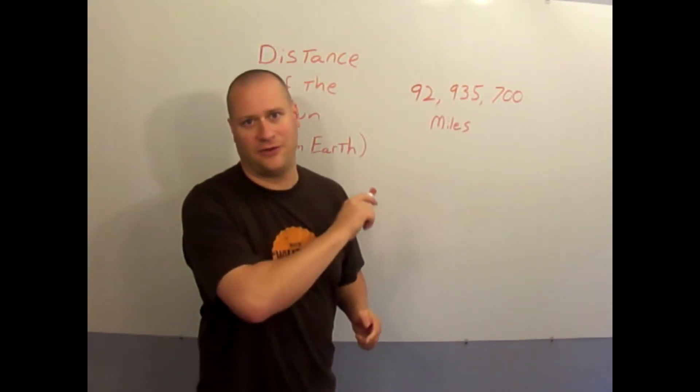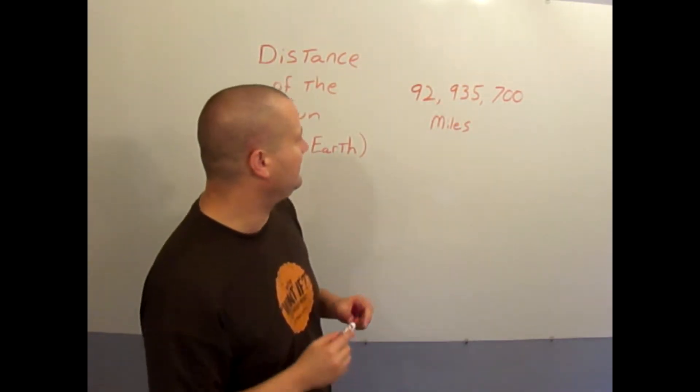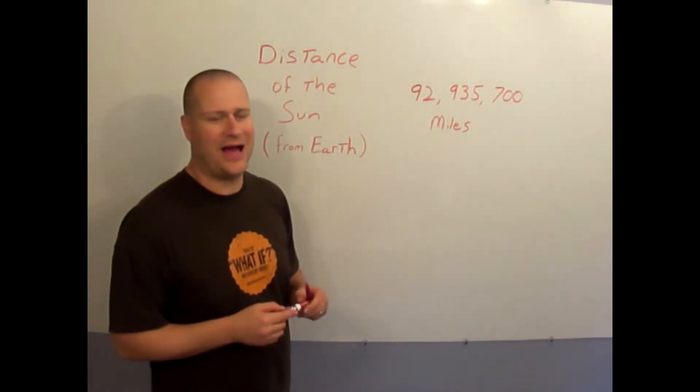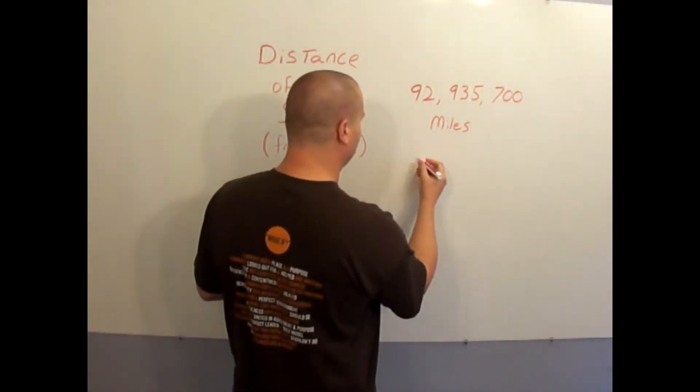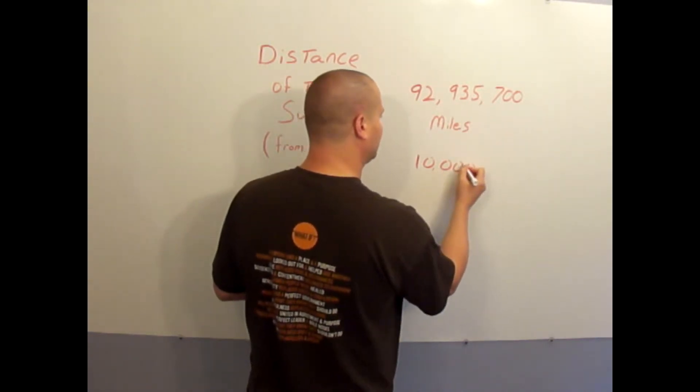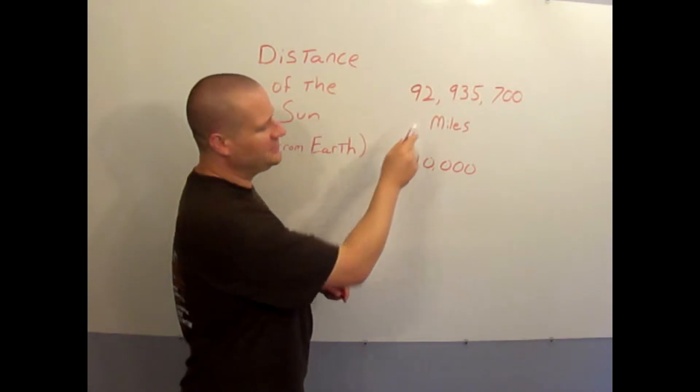I want to talk about how hot is the Sun. They say it's measured at 10,000 degrees hot. What's really interesting though is this 92 million 935,700 miles is related to the 10,000 degrees.